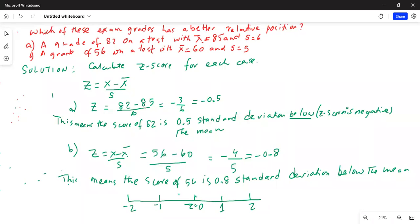Our z-scores are -0.5, which is somewhere over here, and the other one is -0.8.